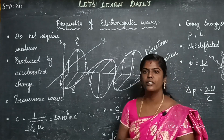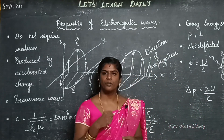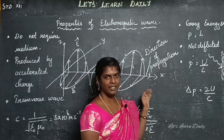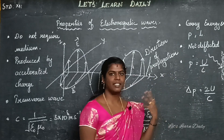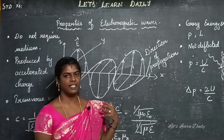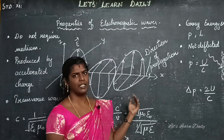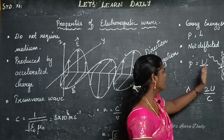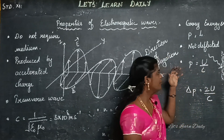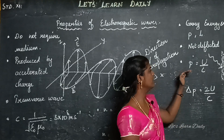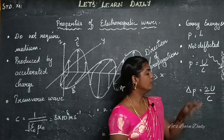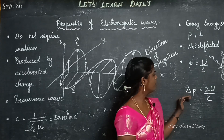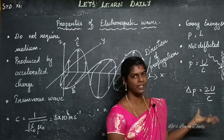Next, there is energy carried by the wave — electric field energy and magnetic field energy. We observe the surface and the energy. The linear momentum is u by c. If there is reflection, it is 2u by c.